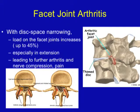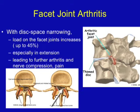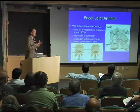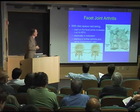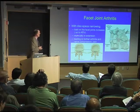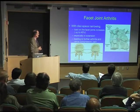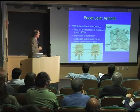When they become degenerative, they can get arthritic and compress the nerves as they exit. They can get bony spurs or develop cysts that compress the spinal canal. So facet disease is a very important cause of back pain, particularly as we age.